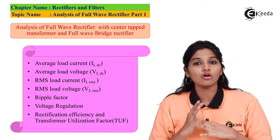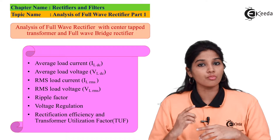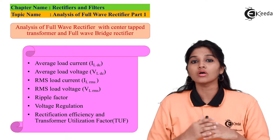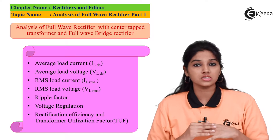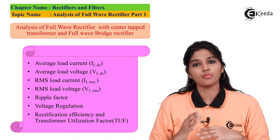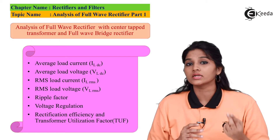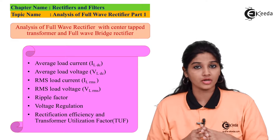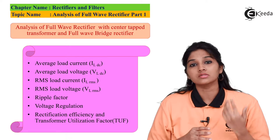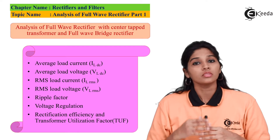Therefore, the value of ILDC is given as: ILDC equals 1 upon pi, integration 0 to pi, IM sin(ωt) d(ωt). When we solve the equation, we find that ILDC equals 2IM divided by pi, which is equal to 0.636 times IM. This value is exactly double the value of ILDC in case of half wave rectifier, so the full wave rectifier provides double the load current compared to half wave rectifier.